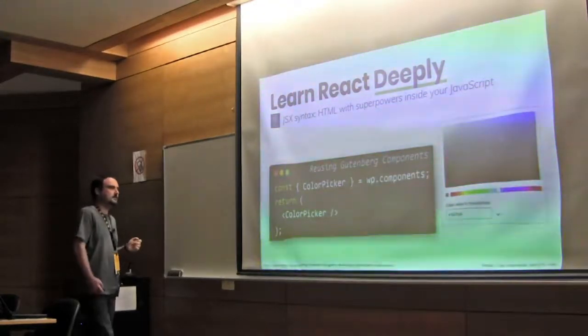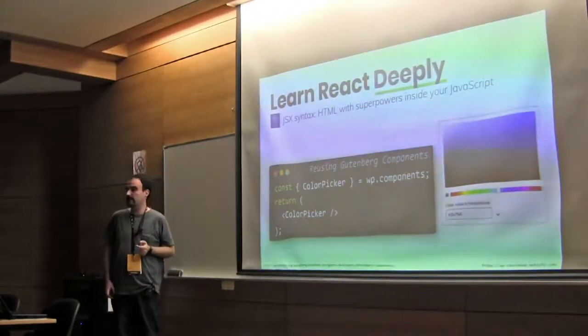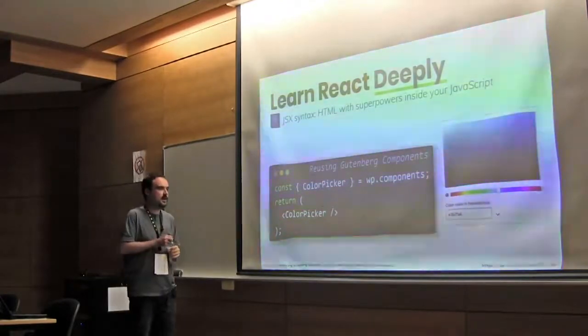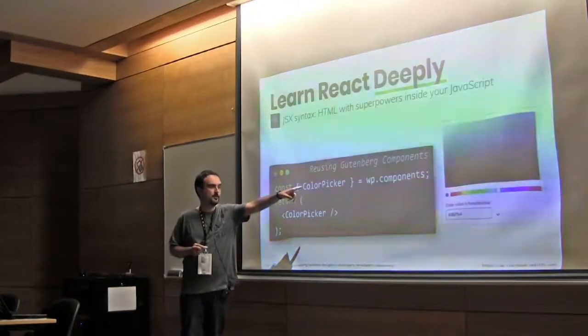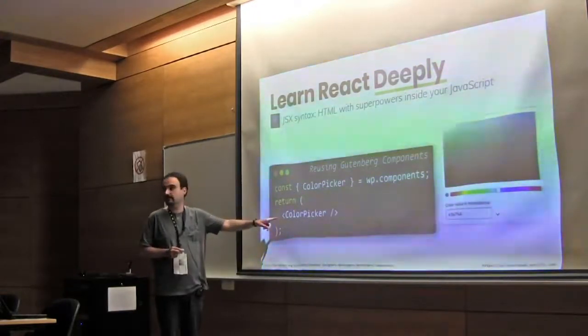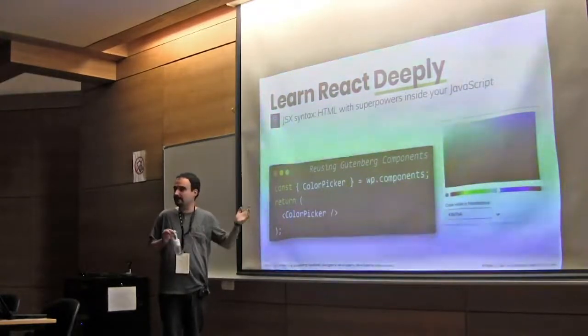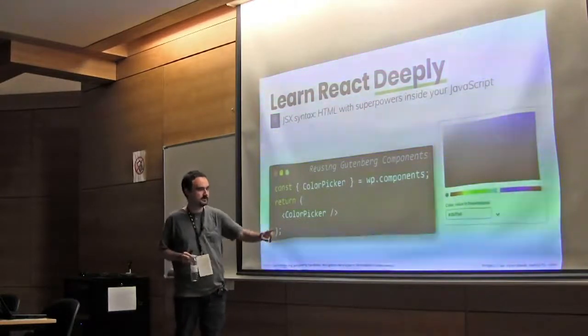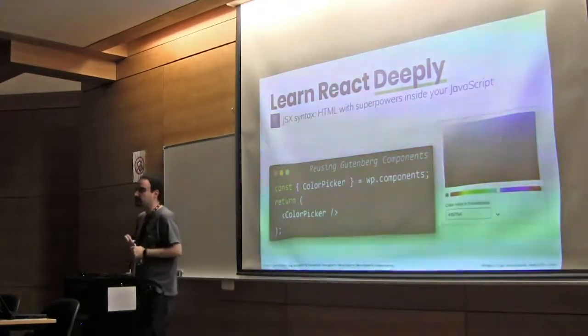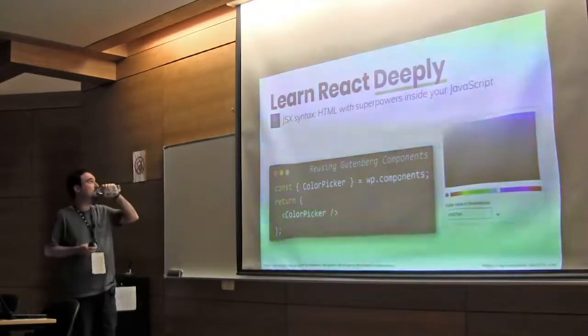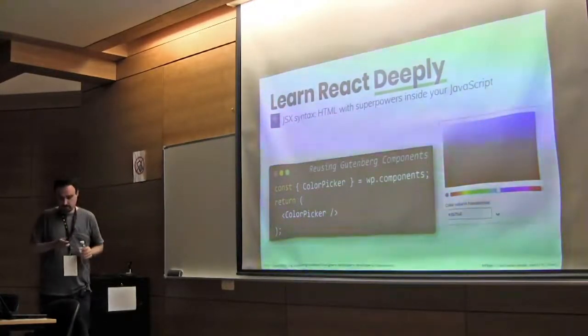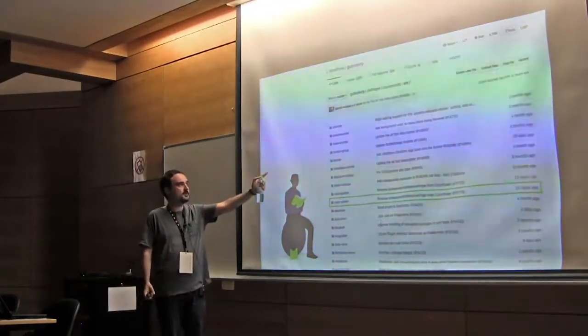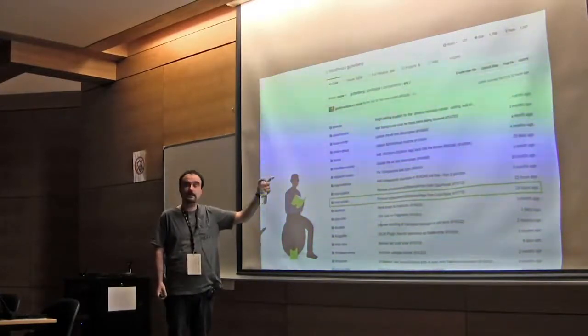The good thing about that is that Gutenberg exposes a lot of components that I can reuse. For example, if I want to use a color picker, I only need to extract the color picker from the components package and use it like that. This wraps a lot of bits and stuff that I don't want to know about. But I only want to put it and I will get a color picker for free.